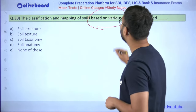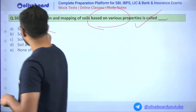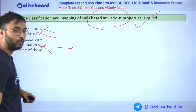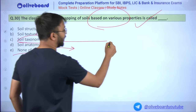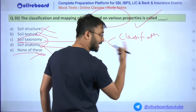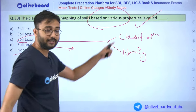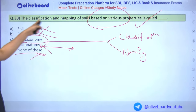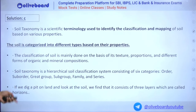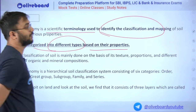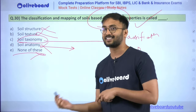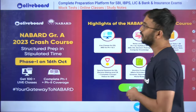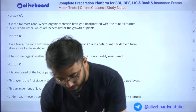Last question: Classification and mapping of soil based on various properties is called what? Soil structure, soil texture, soil anatomy, none of these — the answer is soil taxonomy. Taxonomy is always related to classification and naming. Soil taxonomy is the terminology used for classification and mapping of soil based on various properties including soil texture and structure. This concludes ARD static lecture 3. Thank you very much, see you next time.